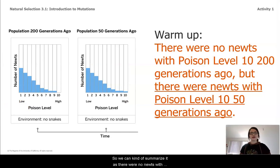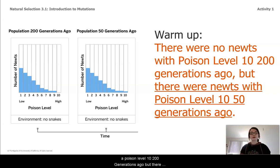So, we can summarize it as: there were no newts with a poison level 10 two hundred generations ago, but there were newts with poison level 10 fifty generations ago.